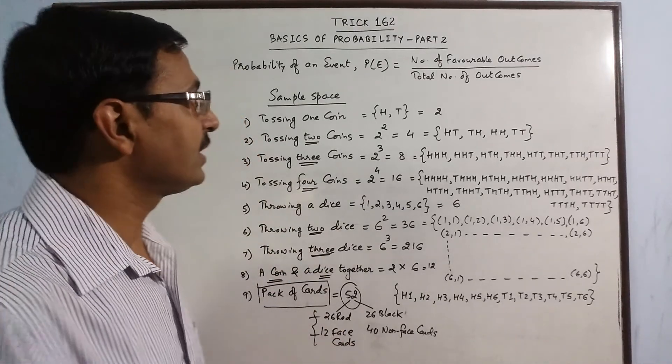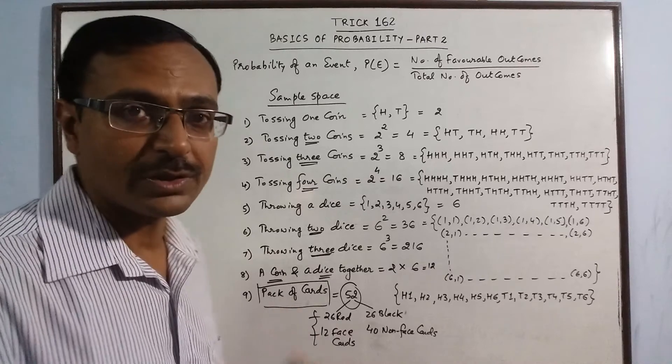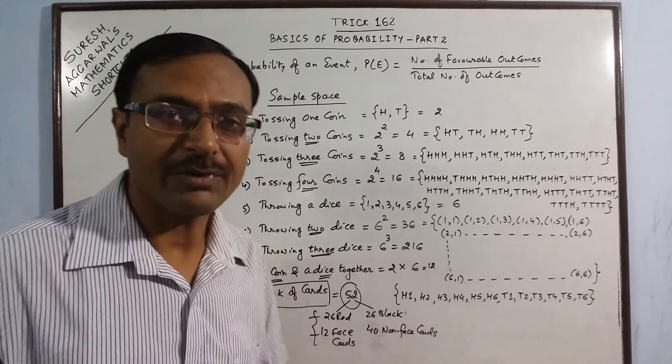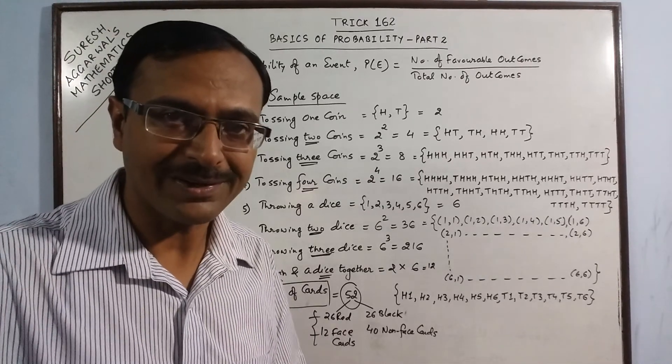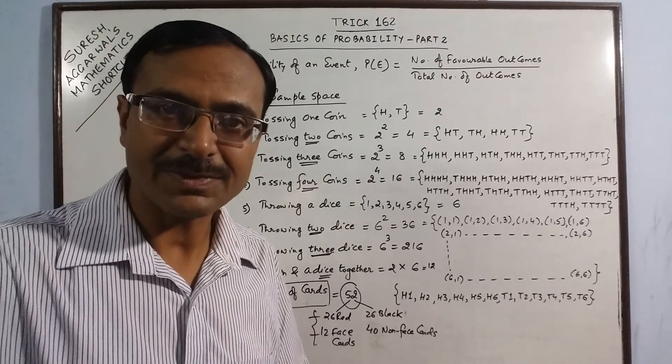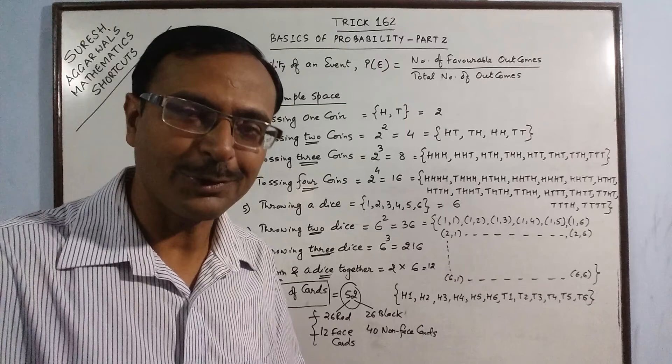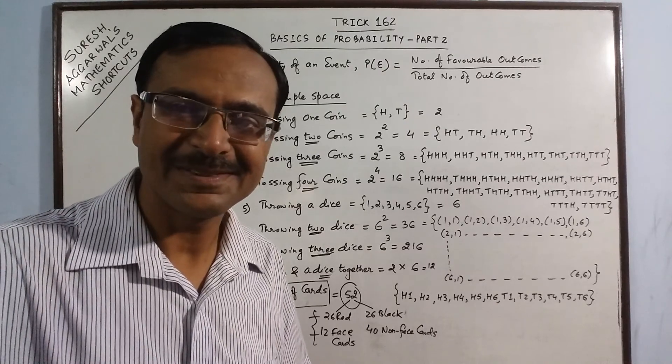In this video we have understood what a sample space is and how we can find the total number of possible outcomes related to an experiment. Keep viewing the series of videos on probability for further understanding of this important topic. Share and subscribe the channel if you like it!